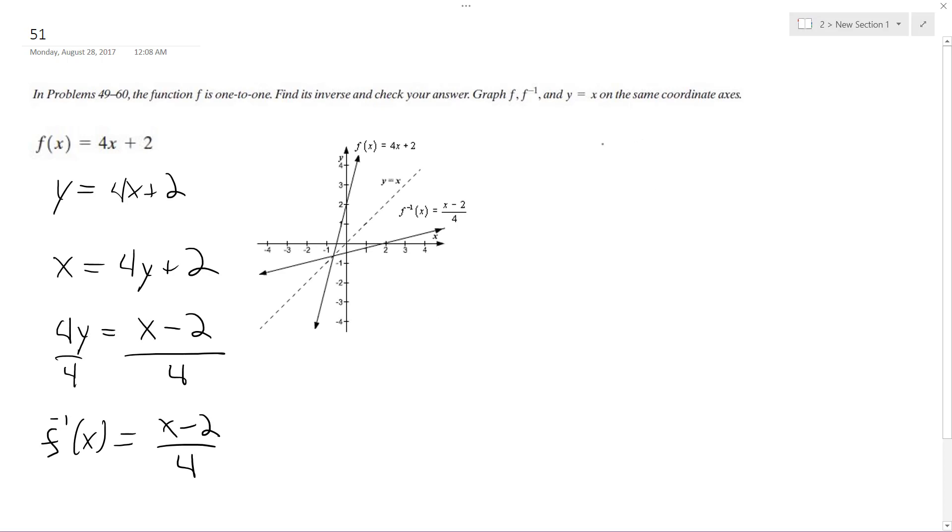And to do a quick check, we can just plug x and y into each other. You're supposed to test it both ways, but I think once is enough. So we'll just plug f of negative 1 into f of x. So we get 4 times quantity x minus 2 over 4 plus 2. The 4s cancel out, we get x minus 2 plus 2. The 2s cancel out, we just get x. So it works out.